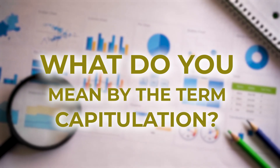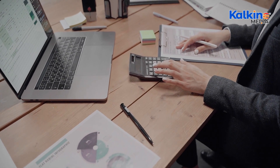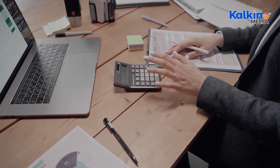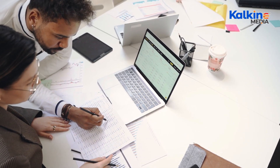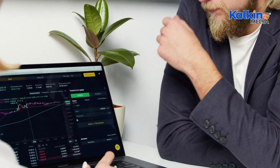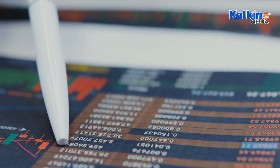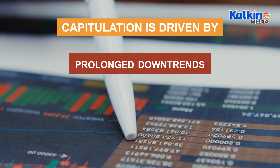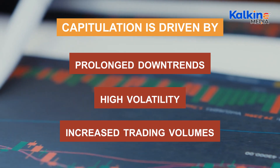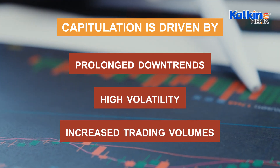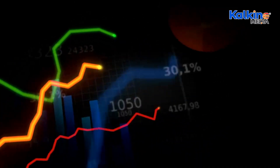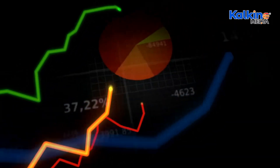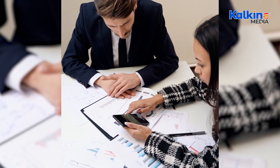In finance, panic trading is closely tied to capitulation — a scenario where investors relinquish their holdings after a prolonged market downtrend, leading to panic selling. Capitulation generally involves large stock volumes being sold at significantly lower prices, causing the market to hit its bottom. It is driven by prolonged downtrends, high volatility, and increased trading volumes signaling investor fear, creating a sharp decline in stock prices as most investors opt to sell off their holdings rather than endure further losses.